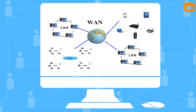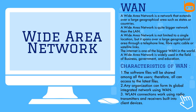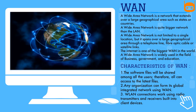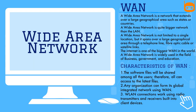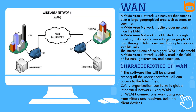A Wide Area Network is a network that extends over a large geographical area such as states or countries. WAN is bigger than LAN and is not limited to a single location. It spans over a large geographical area through telephone lines, fiber optic cables, or satellite links. The internet is one of the biggest WANs in the world, widely used in business, government, and education.